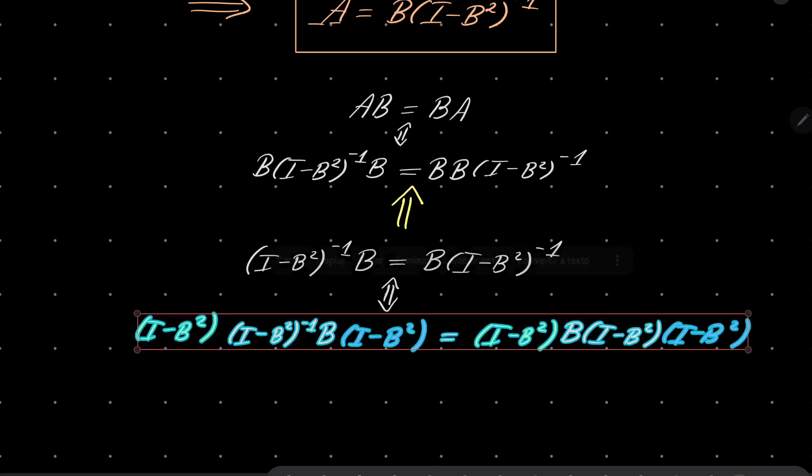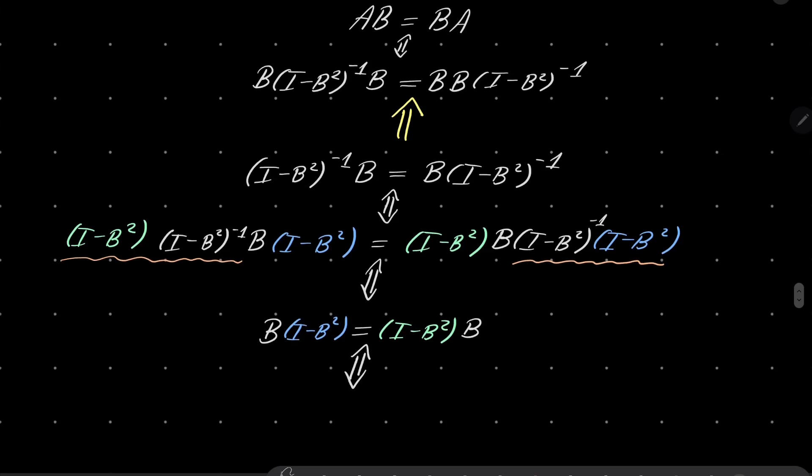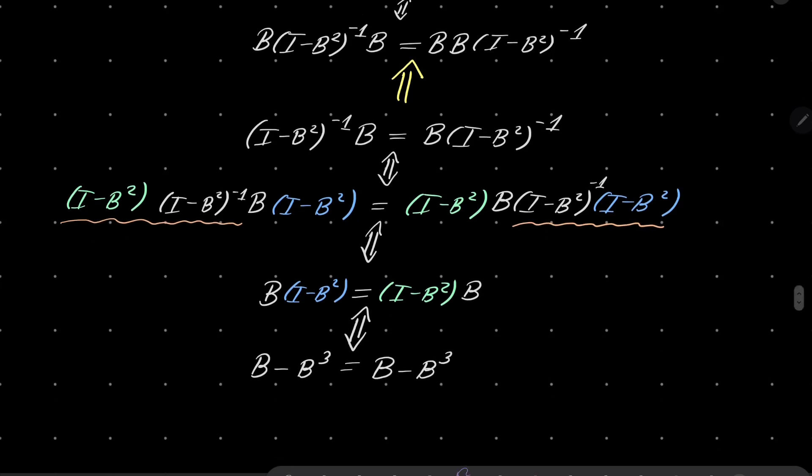Again, this is equivalent because we are multiplying by invertible matrices on both sides. And now notice that this times that is just identity. Likewise, this times that is also the identity. So we have B times I minus B squared equals I minus B squared times B. Notice that this is equivalent. This is equivalent to saying that B minus B cubed equals B minus B cubed, which is true. This is obviously true. This holds.